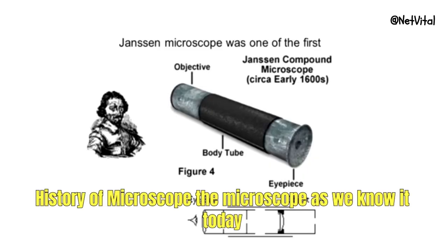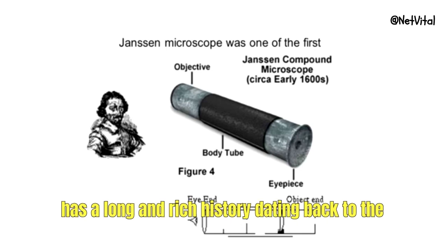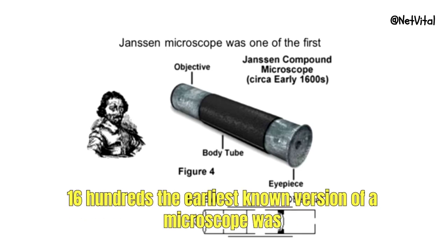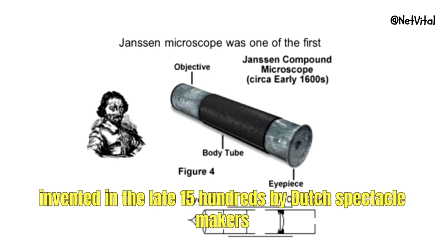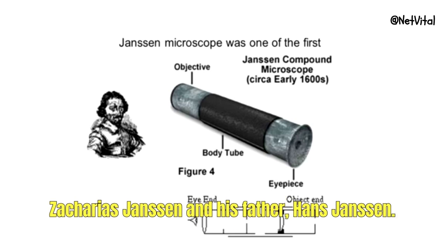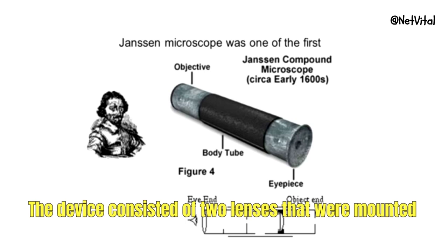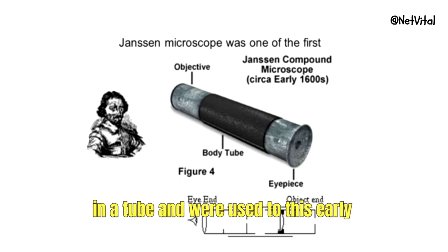History of the microscope. The microscope as we know it today has a long and rich history dating back to the 1600s. The earliest known version of a microscope was invented in the late 1500s by Dutch spectacle makers Zacharias Jansen and his father Hans Jansen. The device consisted of two lenses mounted in a tube.